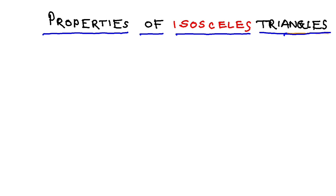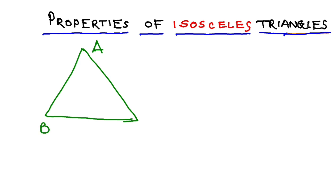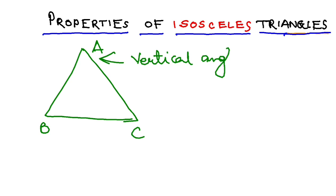So let us first learn these two properties. The first one — I have to take an isosceles triangle. If I take an isosceles triangle ABC: in an isosceles triangle, two sides are equal. Now if I draw this triangle, this angle is normally called the vertical angle. That's the first concept you need to learn — the vertical angle. Let us assume that two sides are equal, so I have taken AB equal to AC.